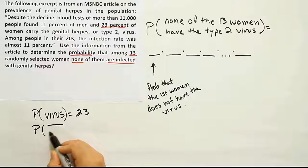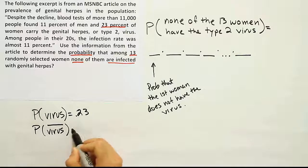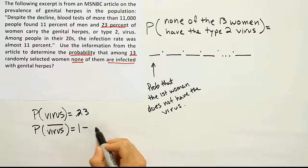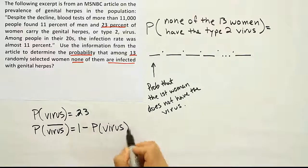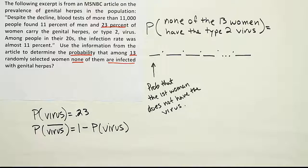The probability that a person does not have the virus by simply doing 1 minus the probability that they have the virus. Right, this is the complement idea.